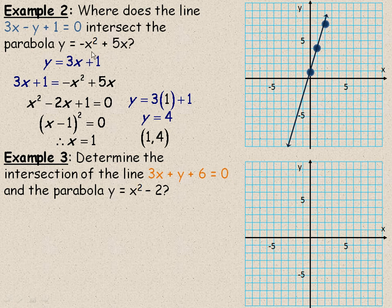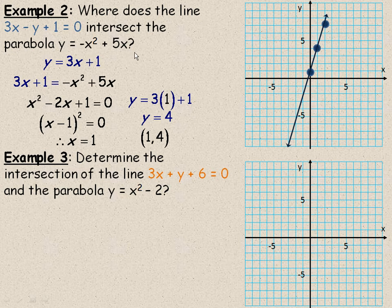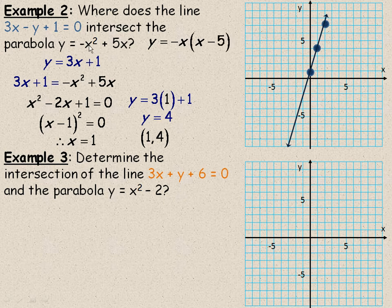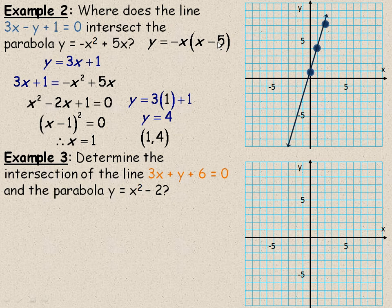Now, to graph y = -x² + 5x, I guess I could complete the square. Probably a little simpler way to do this is to put this in intercept or factored form. You can factor a -x out of -x² + 5x, and you get -x(x - 5).